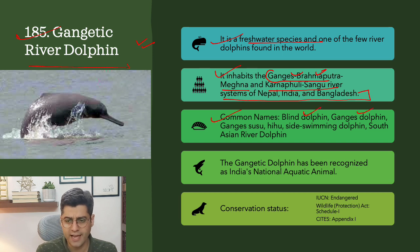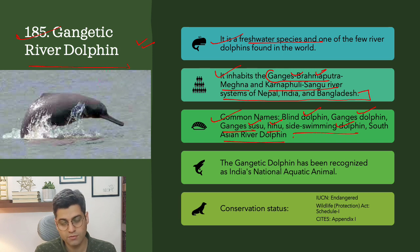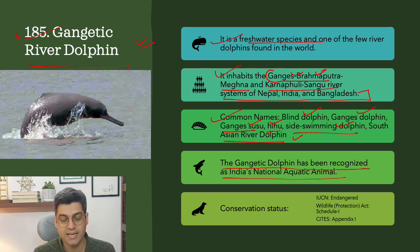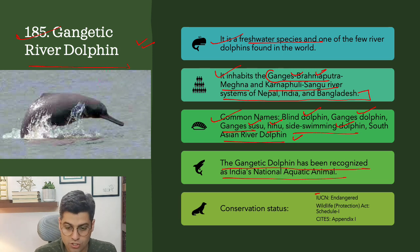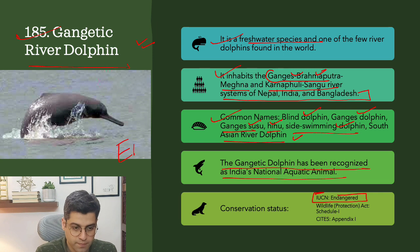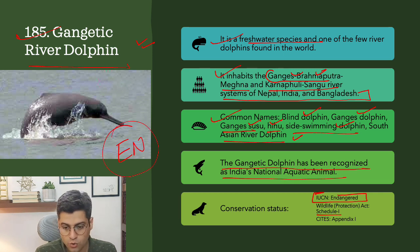Common names include Blind Dolphin, Ganges Dolphin, Ganges Susu, Heahu, Side Swimming Dolphin, and South Asian River Dolphin. The Gangetic Dolphin has been recognized as India's national aquatic animal. Conservation status: IUCN Endangered, Wildlife Protection Act Schedule 1, and CITES Appendix 1.